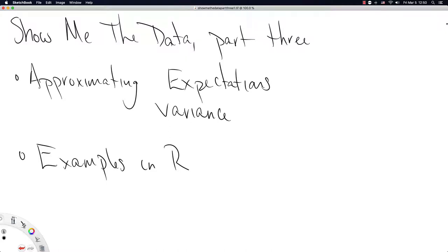This video is going to be show me the data part three. We're going to talk again about approximating expectations. There's such little to say about it because it's just a fact of mathematics that works out kind of compactly and neatly once you have appropriate notation going on. And then we'll look at examples in R. All of the approximation and examples in R are going to surround the expectation known as the variance.